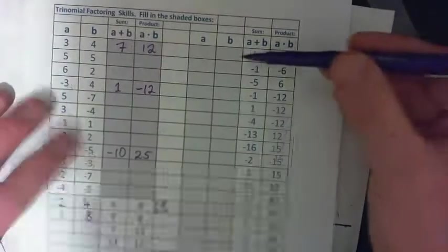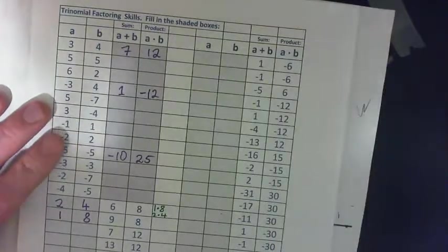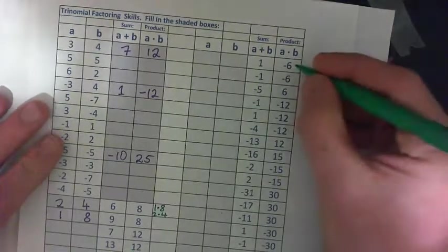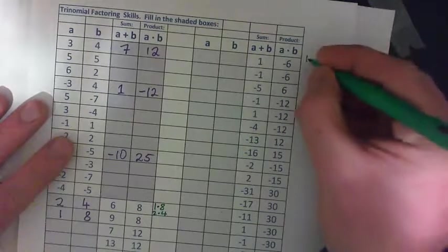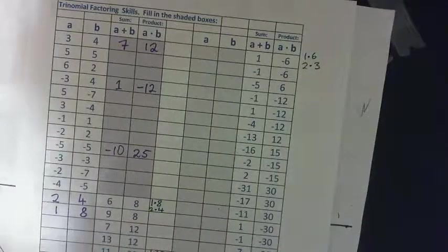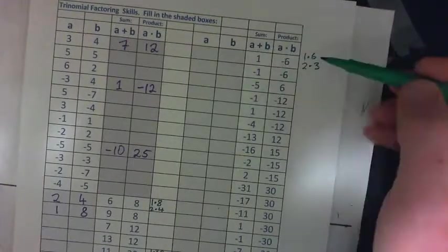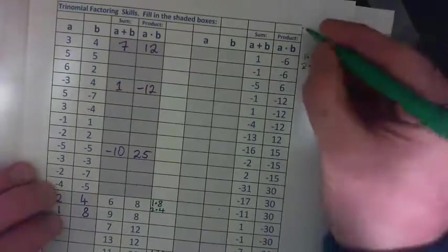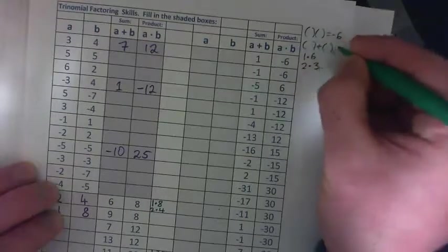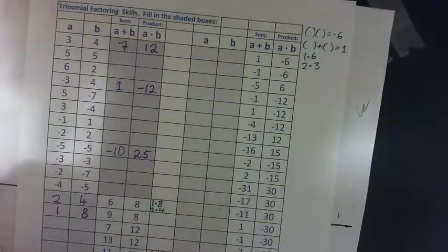What's A, what's B if A plus B is 1 and A times B is negative 6? If two numbers add to 1 and they multiply to negative 6, what are the two numbers? I'm going to take the 6 and write 1 times 6 and 2 times 3. We're looking for two numbers that multiply to give negative 6, and when we add them, we get positive 1.